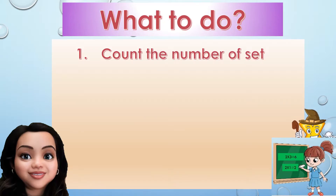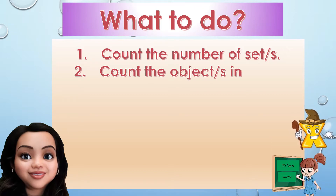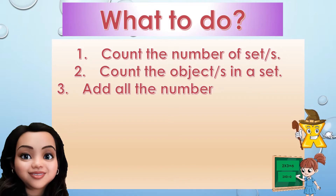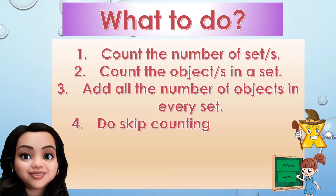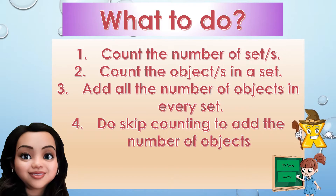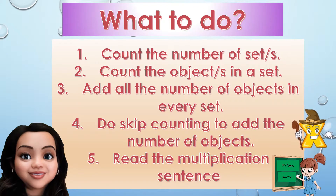What to do? First, count the number of sets. Second, count the objects in a set. Third, add all the number of objects in every set. Fourth, do skip counting to add the number of objects. And then, read the Multiplication Sentence.